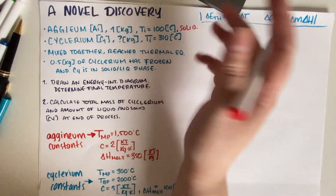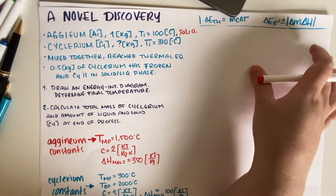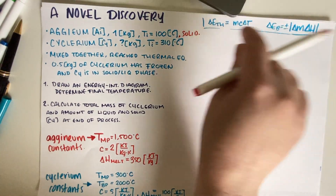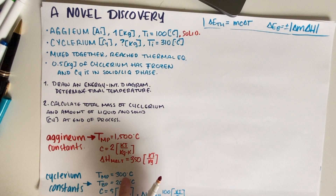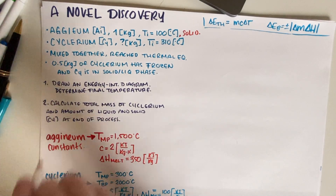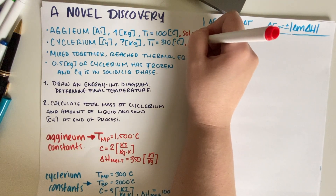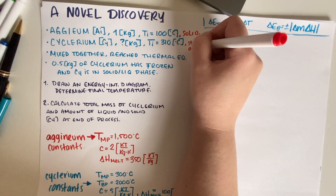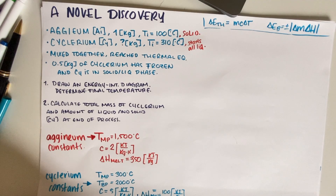Because the upper end of the temperature range is only 310°C, aginium stays solid throughout. Cyclerium starts at 310°C, which is above its melting point but below its boiling point, so cyclerium is going to start all liquid.